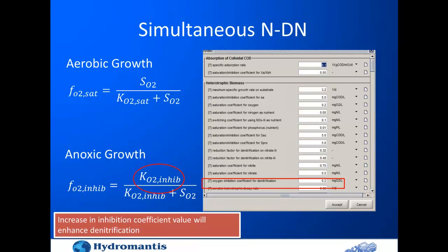For simultaneous nitrification-denitrification, we have two growth processes: aerobic growth and anoxic growth. The aerobic growth function uses an oxygen saturation coefficient. In the previous model, this same coefficient was used to define anoxic growth, which limited calibration flexibility for simultaneous nitrification-denitrification. In the new update, we have segregated these two saturation coefficients, providing a separate coefficient for oxygen inhibition for anoxic growth. By default, the value is set to 0.2 so previous models perform the same way as before.